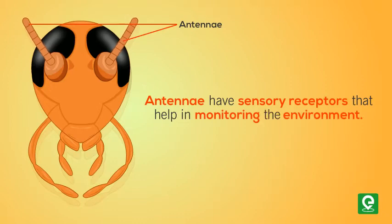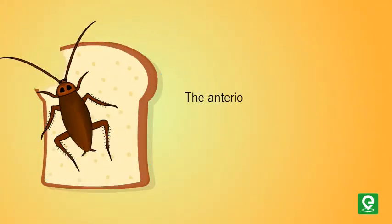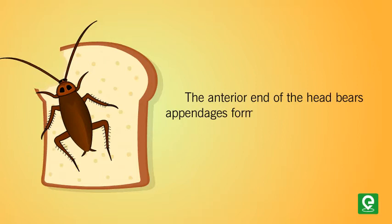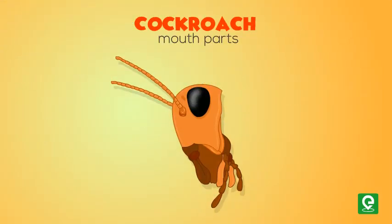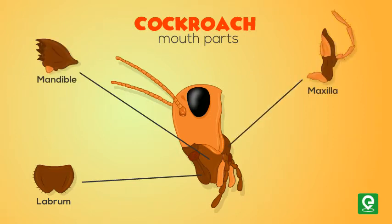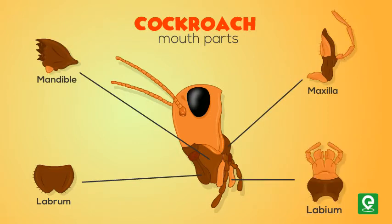The anterior end of the head bears appendages forming a biting and chewing type of mouthparts. The mouthparts consist of a labrum or upper lip, a pair of mandibles, a pair of maxillae, and a labium or lower lip.